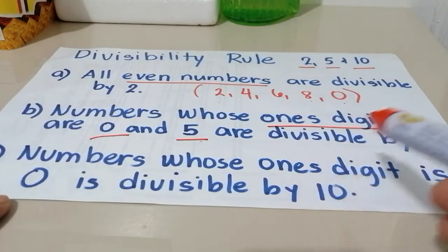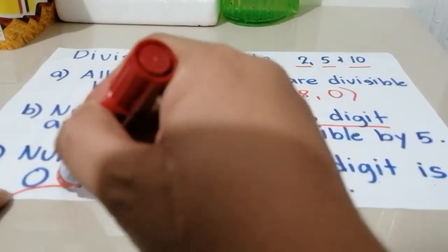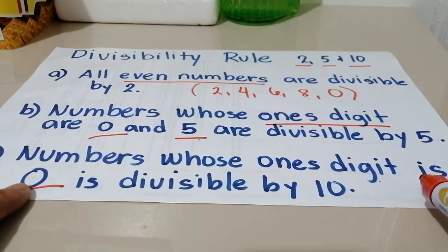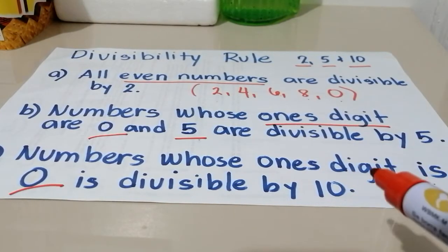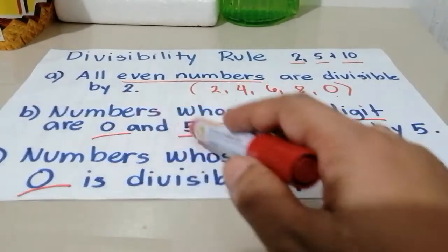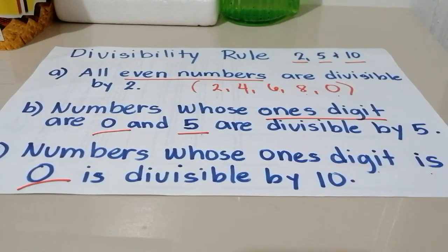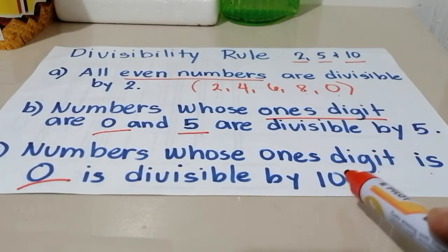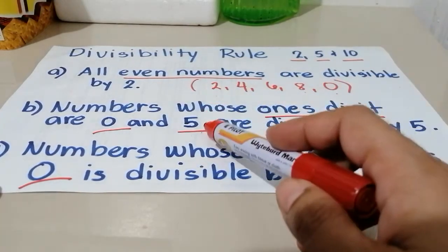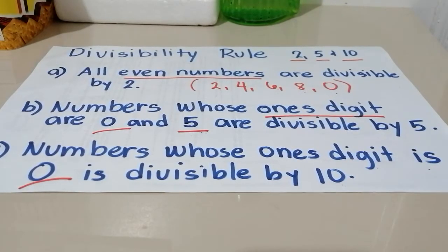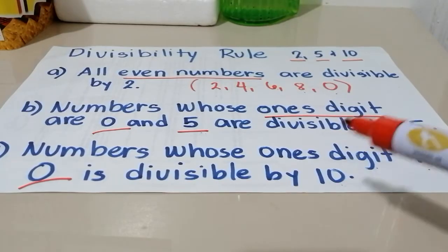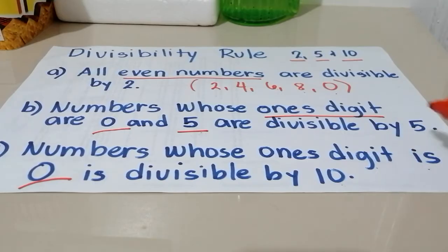Next, numbers whose ones digit is 0 are divisible by 10. Pag yung number ay nag-e-end sa 0, ibig sabihin divisible siya o pwede siyang i-divide ng 10. At pag ang number ay nag-e-end siya sa 0 or 5, meaning divisible siya by 5. So in other words, lahat ng divisible by 10 na nag-e-end sa 0 ay divisible din siya by 5. Pero ang 5 ay hindi siya laging divisible by 10 — depende lang.